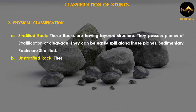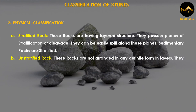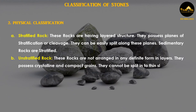Unstratified rocks are not arranged in any definite form in layers. They possess crystalline and compact grains and cannot be split into thin slabs. Igneous and metamorphic rocks are unstratified.